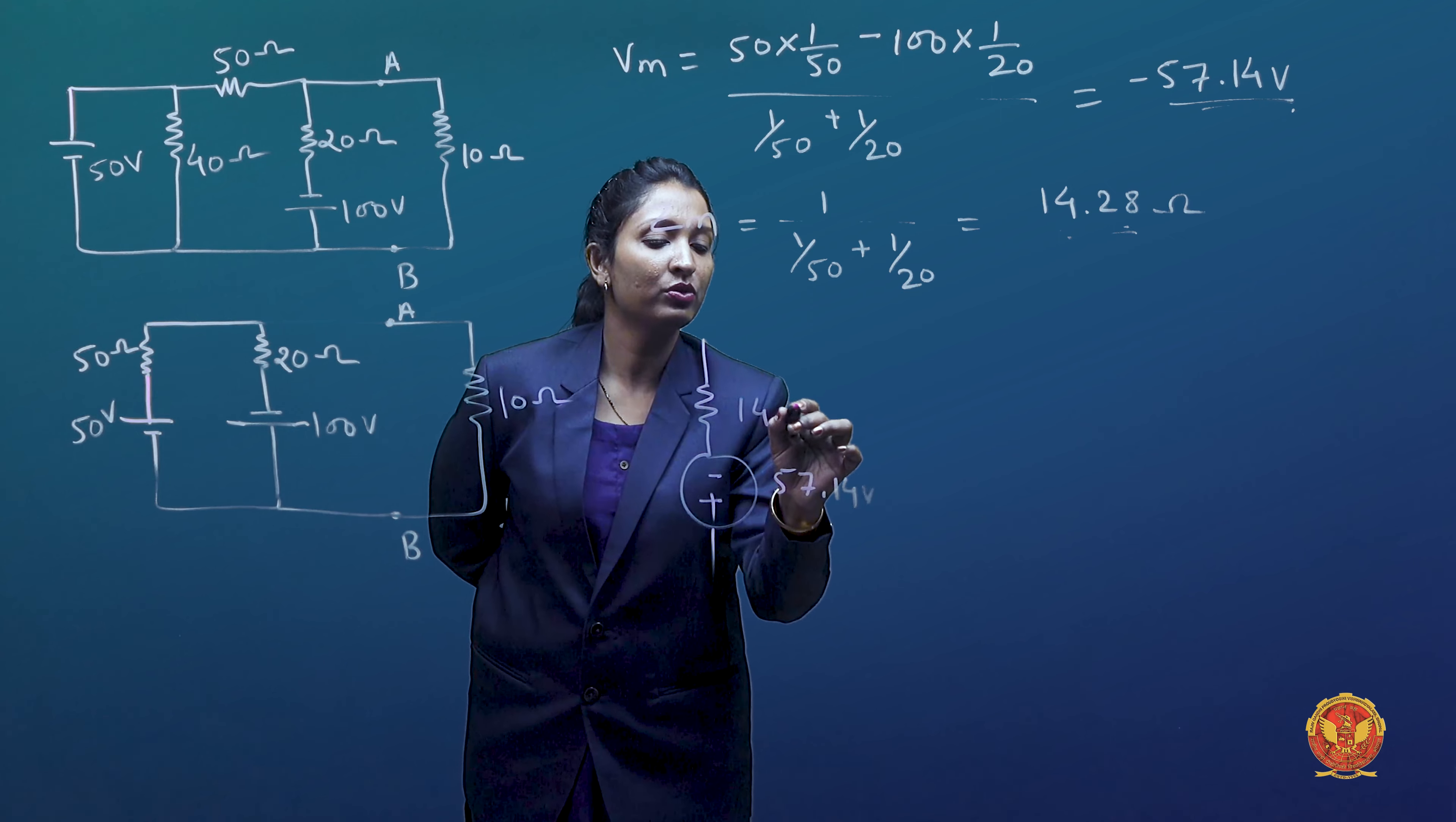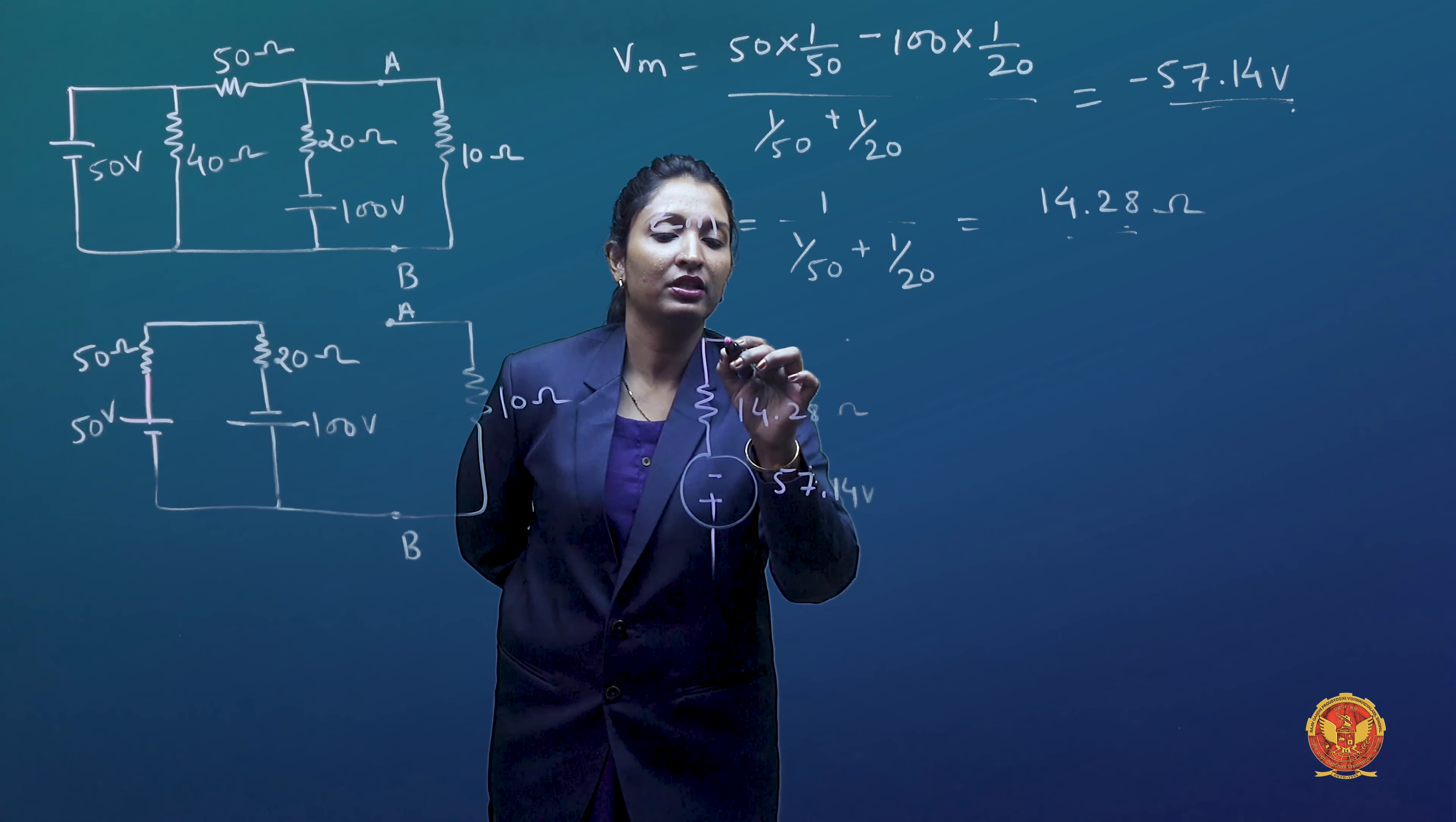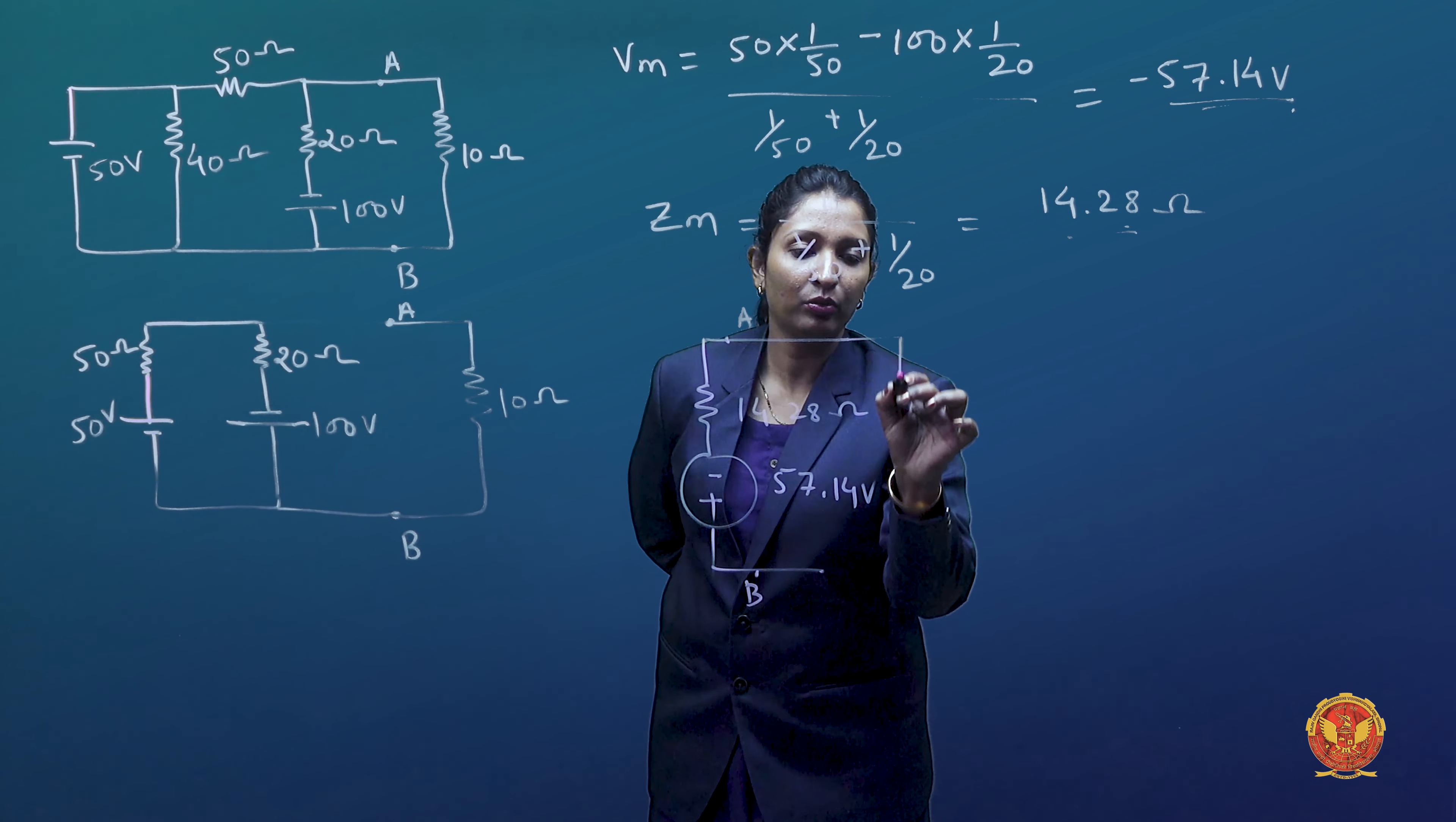14.28 Ohms. These terminals are A and B. What is connected across this? This is 10 Ohm resistance.